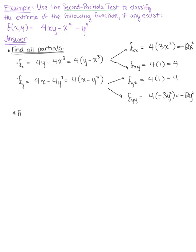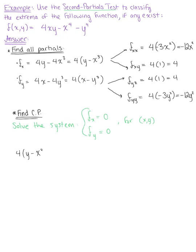Now we're ready to find the potential critical points. To find these, we need to solve the system of equations defined by the partial derivatives set equal to zero. So we have the partial derivative with respect to x set equal to zero, and the partial derivative with respect to y set equal to zero, solving for ordered pairs (x, y). That gives us 4(y minus x cubed) = 0 and 4(x minus y cubed) = 0. Dividing both sides by 4, we get y minus x cubed = 0 and x minus y cubed = 0.